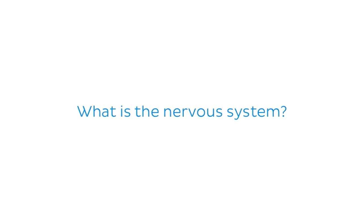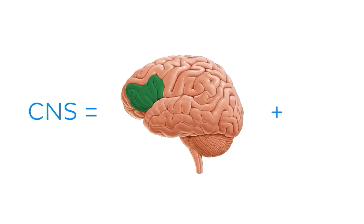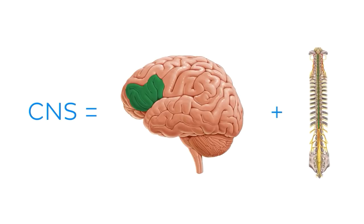The nervous system is made up of two parts. We'll begin with the central nervous system, otherwise known as the CNS. The central nervous system is the part of the nervous system which consists of the brain and the spinal cord.